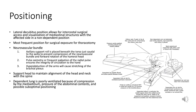The lateral decubitus position is commonly used in thoracic surgeries, specifically for thoracotomies, with the patient lying on their side and the surgical side facing upwards. It provides surgeons with intercostal access to the thoracic cavity without requiring rib spreading or resection. Since the procedure demands clear access to lung tissues, the lateral decubitus position is most commonly employed and provides the most direct, unobstructed access.